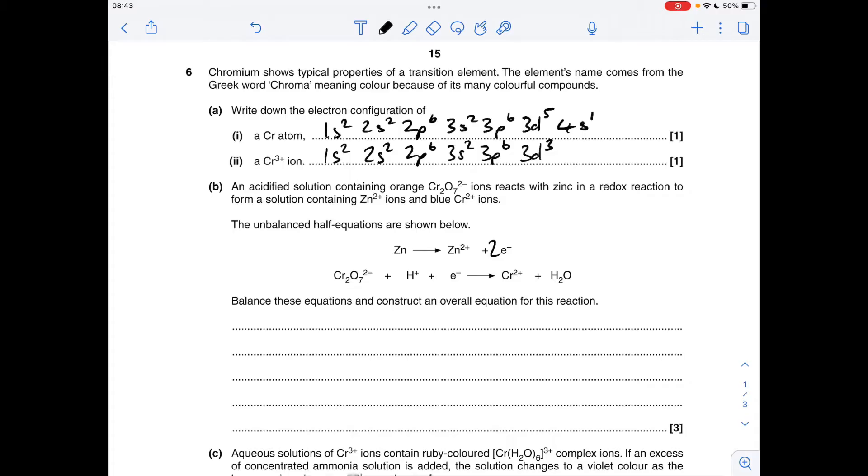Moving on to the other one, we've got two chromiums on the left, but only one on the right, so we'll need a two in front of that. We've got seven oxygens on the left, only one on the right, so if we put a seven in front of the H2O, and that gives us 14 H's, so we need 14 H⁺.